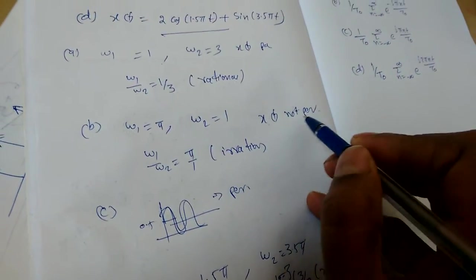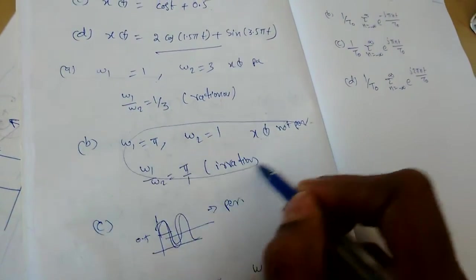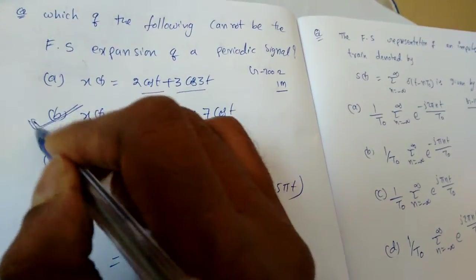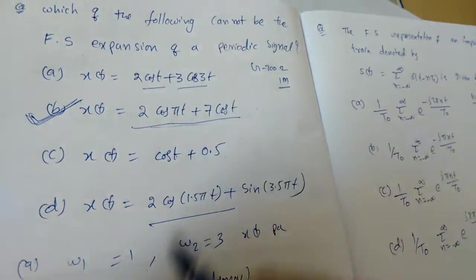So which one is not a periodic x of t? Which is b. So option b, I cannot go for a Fourier series expansion because this summation of signals is not periodic.